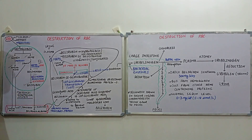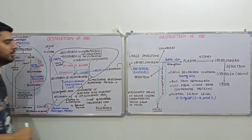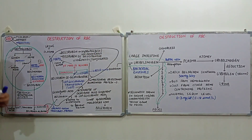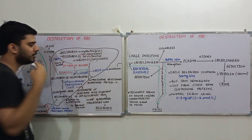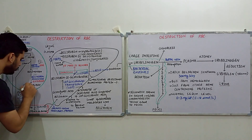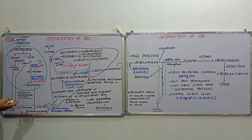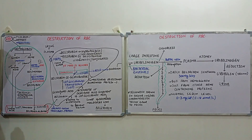Bilirubin is a hydrophobic molecule, meaning it cannot travel within a fluid medium. It is also unconjugated — the distinction between conjugated and unconjugated will be explained later. All three components — amino acids, iron, and bilirubin — are released into the blood.